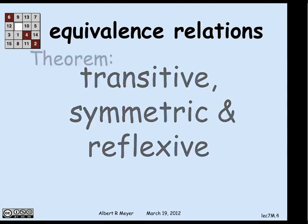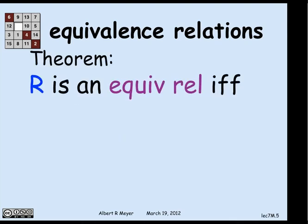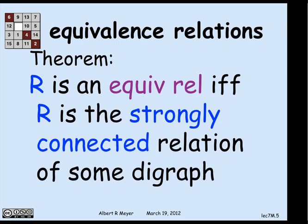The theorem is, conversely, that any equivalence relation — anything that's an equivalence relation — is the strongly connected relation of some digraph. The proof is trivial: it's the strongly connected relation of itself.